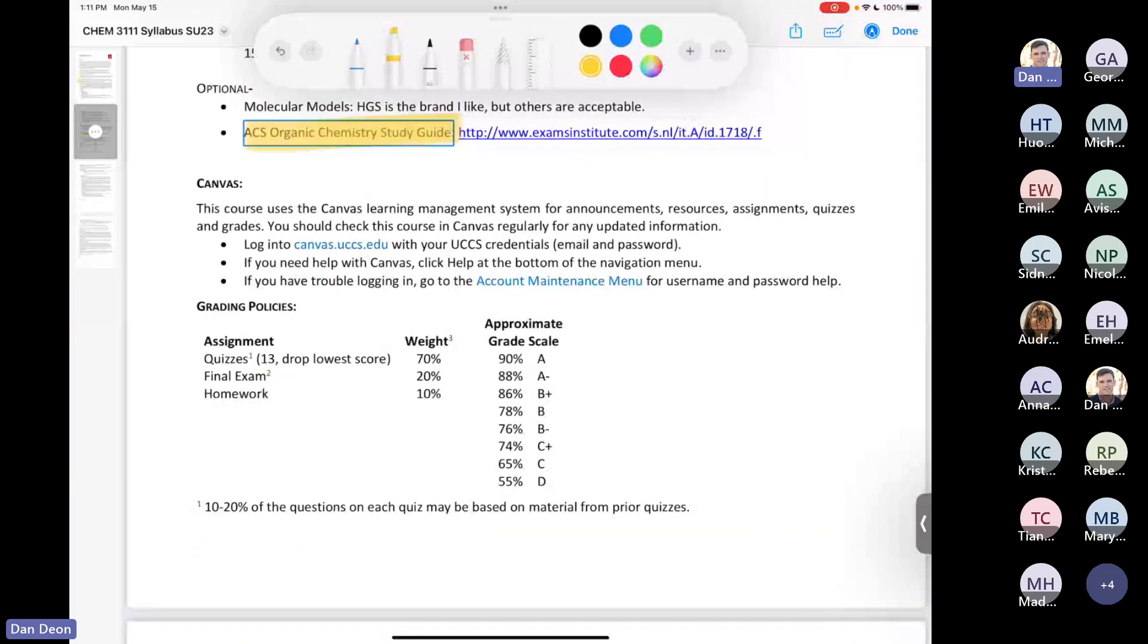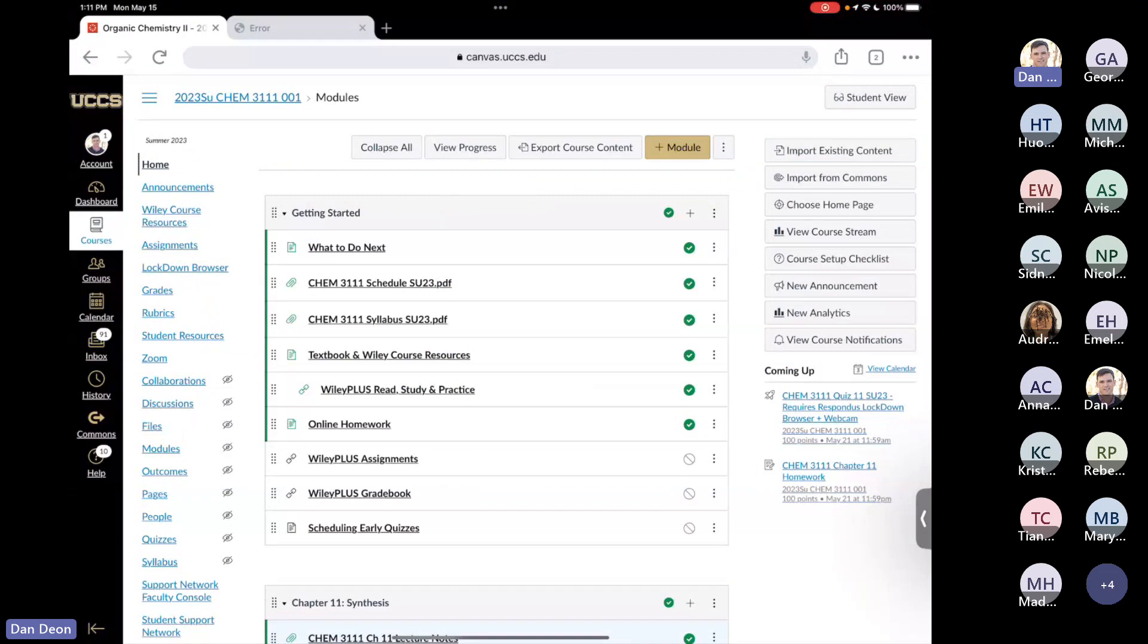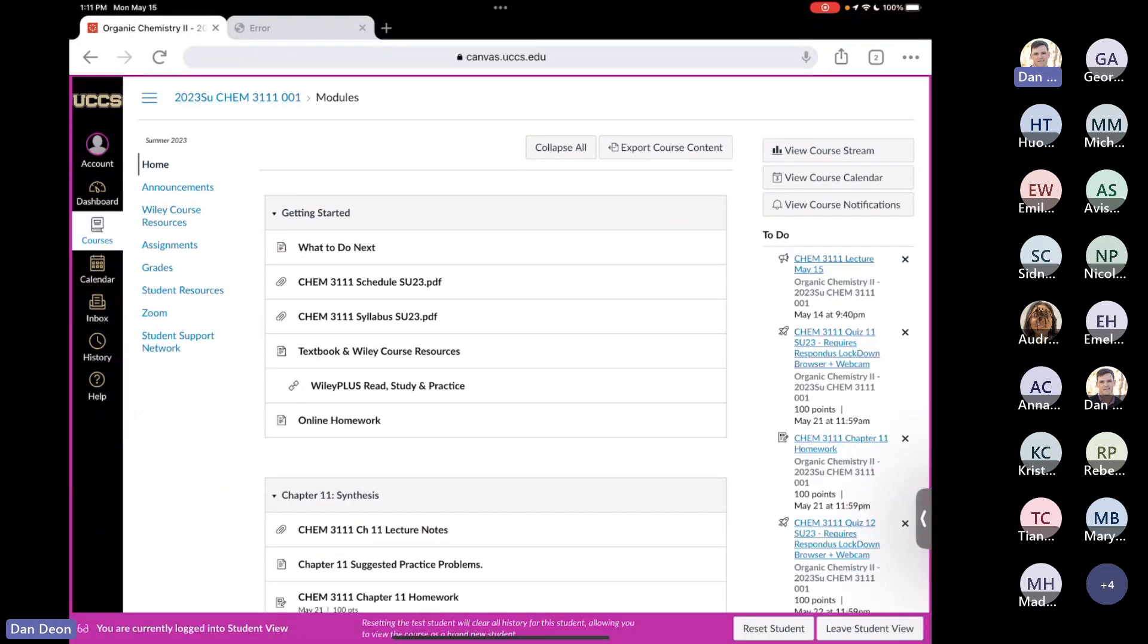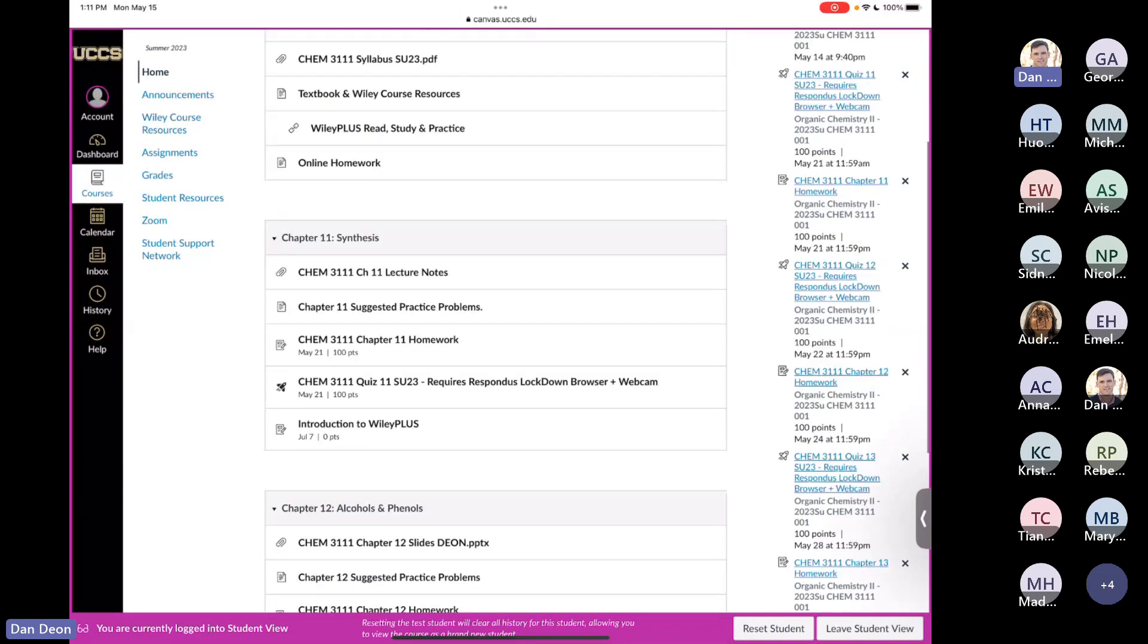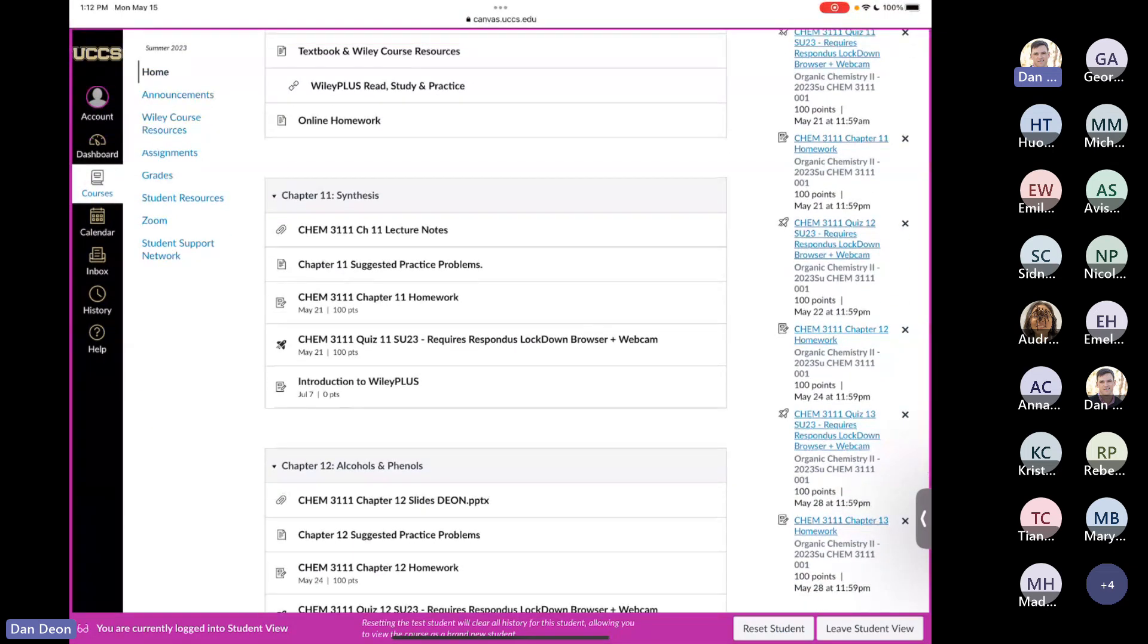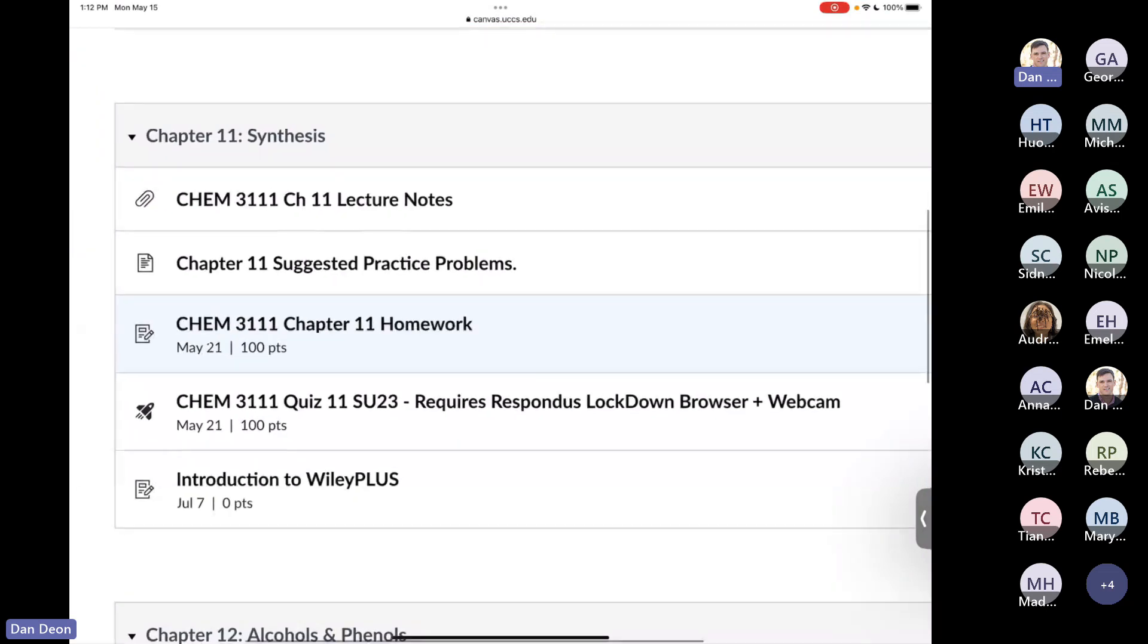Next thing is Canvas. So we use Canvas for all of our announcements and assignments and everything. And I think that most people who are hearing the sound of my voice are familiar with Canvas. If you're not, this is what our class's Canvas shell looks like. This isn't the instructor view. And unfortunately for me, if I switch over to student view, so this is what you guys see, it doesn't really work that well for me. But for those of you who have never had me as an instructor before, if you go under chapter 11, which is where we're going to start today, you can see that I have the lecture notes posted. The homework assignment is there. Quiz 11, which we're going to talk about more on Wednesday is posted. It's not open for a while. It's not open until the 21st. But again, homework is there.